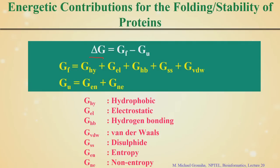So you get data for delta G from chemical denaturation and thermal denaturation. The question is how to interpret this data using contributions from different interaction energies. Delta G is the free energy difference between the folded and unfolded state. The folded state contributions are mainly enthalpy: hydrophobic free energy (GHY), electrostatic free energy (GEL), hydrogen bonding free energy, disulfide bonding free energy, and van der Waals free energy. The major contribution from the unfolded state is entropy.